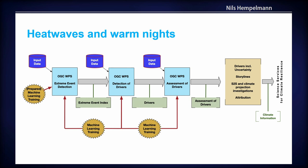Once the drivers have been detected using as much data as can be ingested, you can make an assessment of the drivers and do predictions for the future — these are the storylines that come out. We have several test regions, because machine learning requires reduced domains, so we have test regions in Europe as well as Africa to understand better how well the approach works.